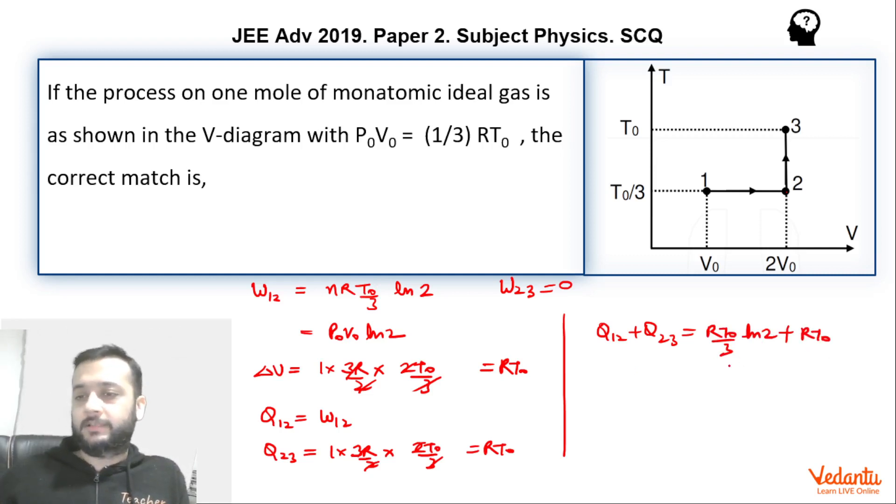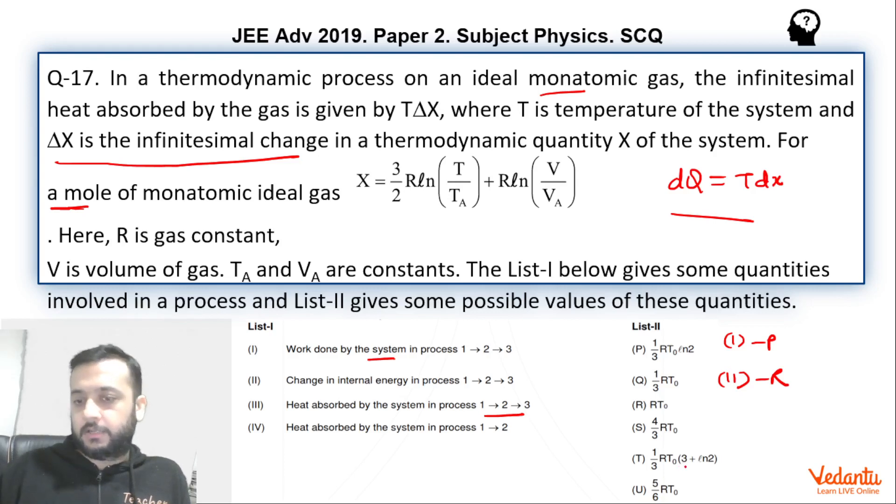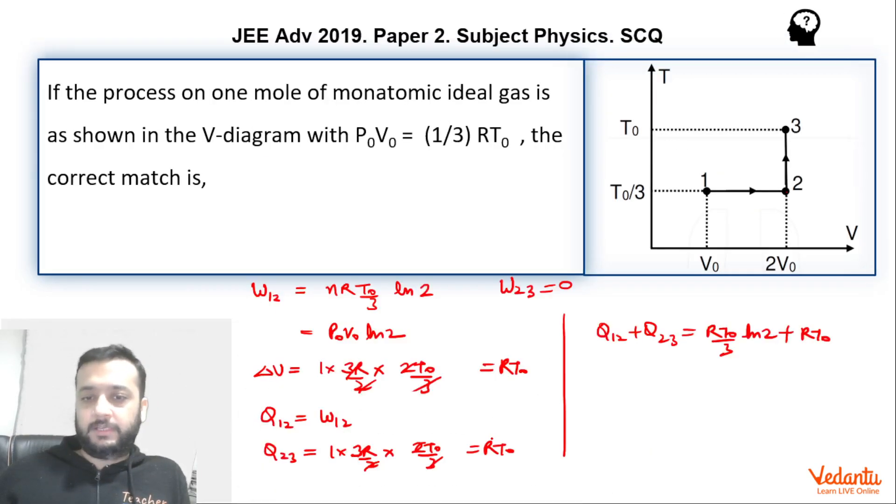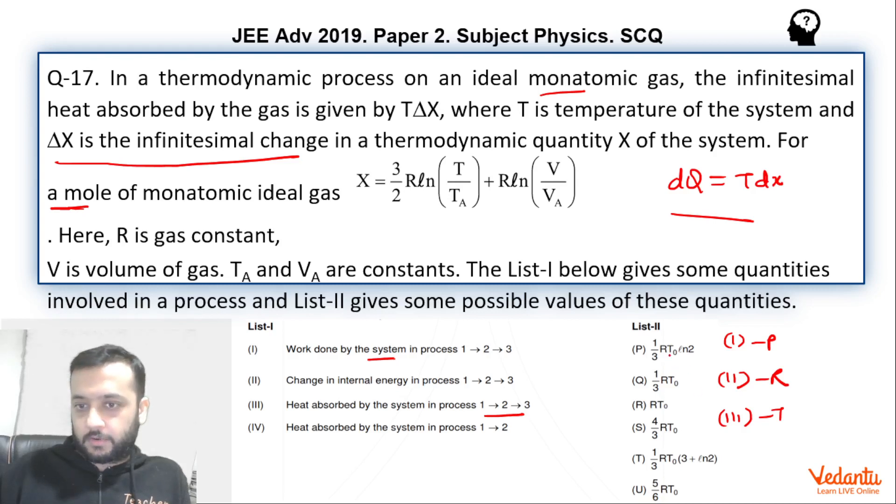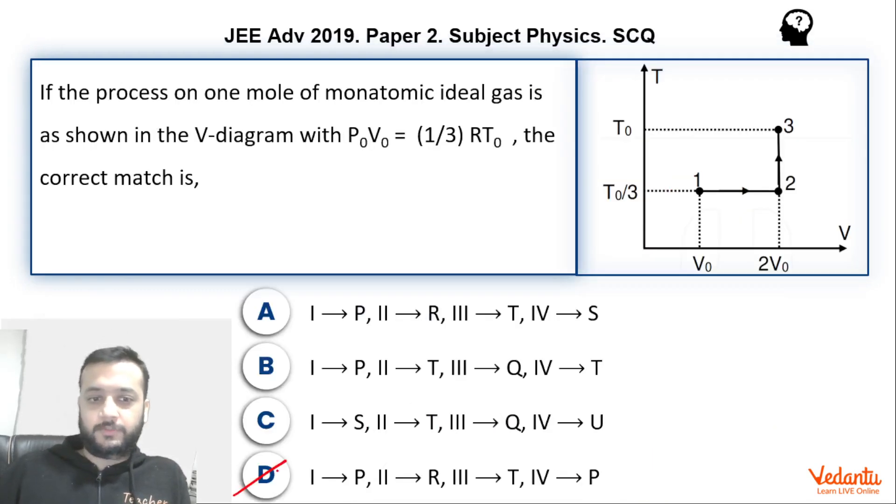So RT0 ln 2/3 plus RT0. This option, question D will be the correct answer for this. I hope you would have understood a fairly simple question. Thank you.